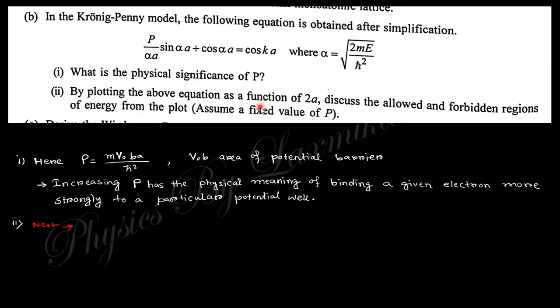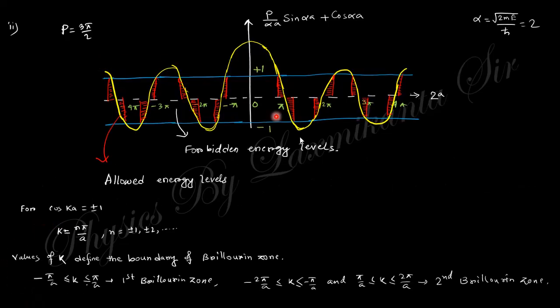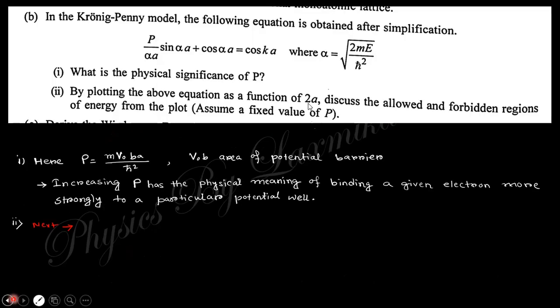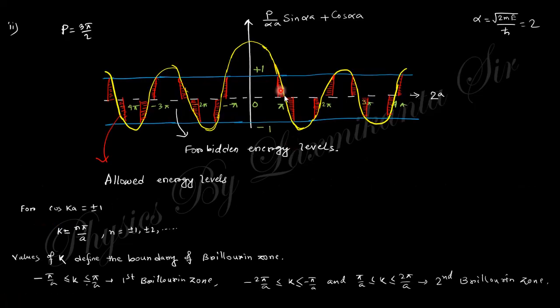Next question: by plotting the above equation as a function of 2a, discuss the allowed and forbidden regions. If you plot this function with 2a, the graph will be like that, where P is a constant. Taking 3π/2, this region below this one, because cos(ka) is from +1 to -1, this region is actually allowed. The red colored shaded region is allowed, and the rest is the forbidden region.